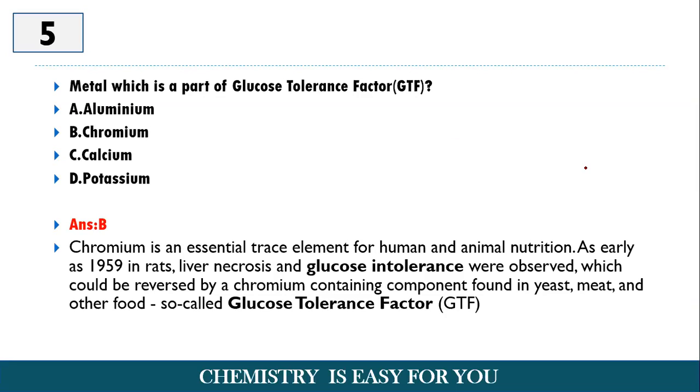So what happened was in early 1959, certain mammals like rats showed the glucose intolerance and they found that this phenomenon called glucose intolerance was reversed by a chromium containing component which was present in meat and certain other foods. And that particular component which contains chromium was called as the glucose tolerance factor or GTF. And another important point is that chromium is an essential trace element. So you should remember this term, chromium is therefore a trace element and it is also a part of the glucose tolerance factor or GTF. And it can reverse the process of glucose intolerance.